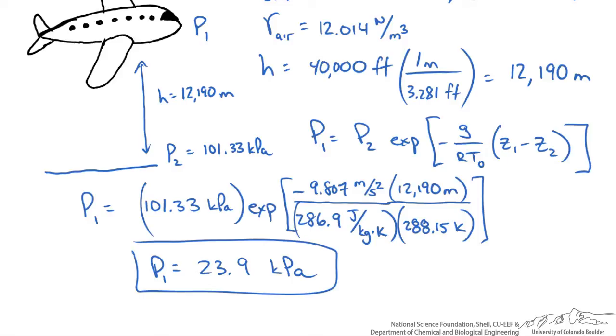So now the real question is how much does it differ if we take into consideration that there may be a temperature gradient from sea level to the height of interest, 40,000 feet.